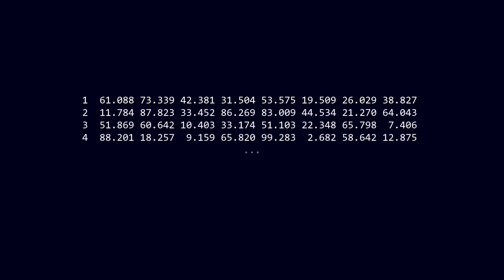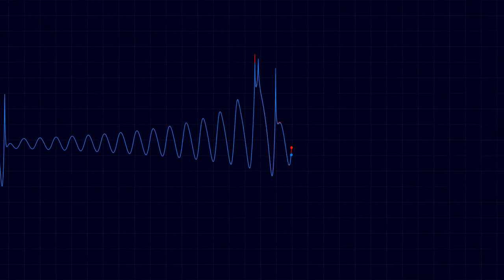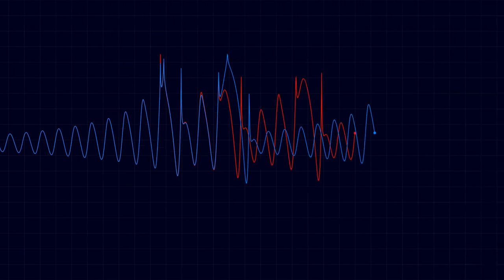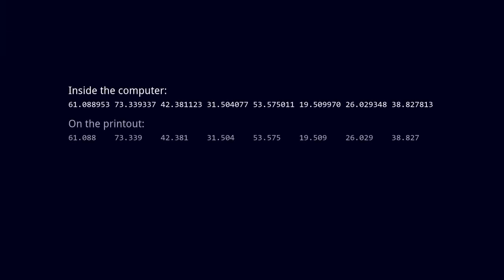When Lorenz put these numbers back into the computer and ran the program again, it started out close to the original, but the longer it ran, the more it diverged until eventually it no longer resembled the previous predictions. At first, he thought there was a problem with the computer, but he later determined that the difference was caused because the computer stored data to six decimal places, but only printed out three.